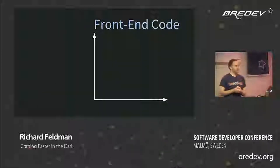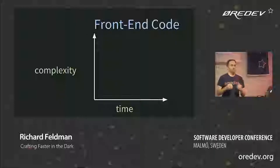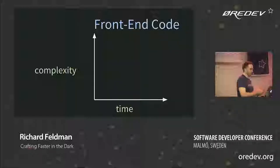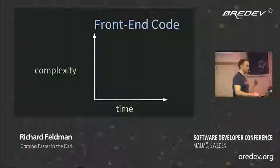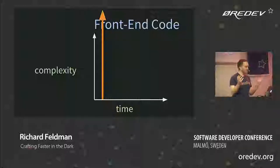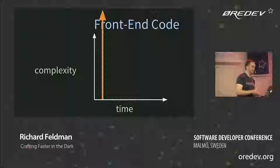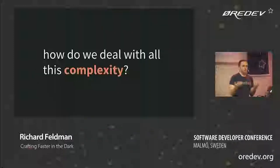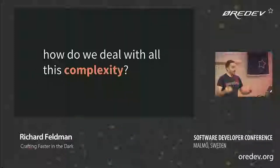The complexity of front-end has also been affected by this, as you might imagine, as the percentage of the code base goes up. It's been more than that — it's completely absurd how complicated front-end code bases have gotten. So there's this natural question: how do we deal with all this complexity?